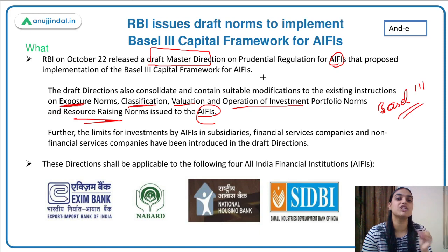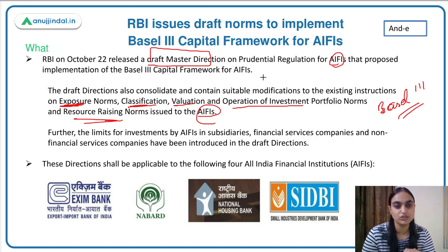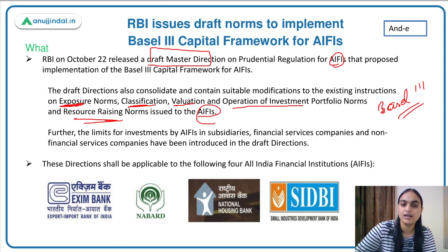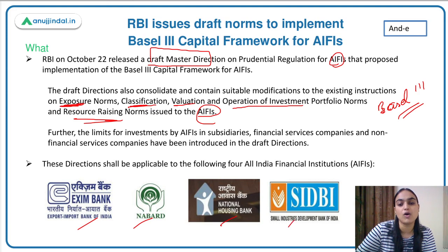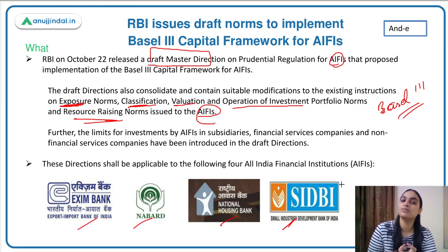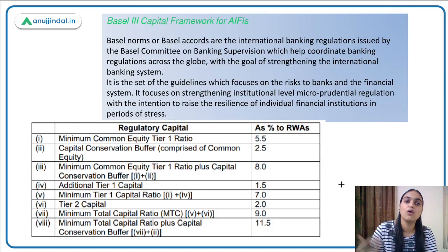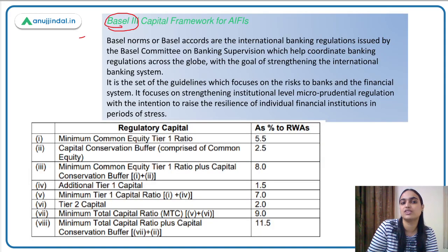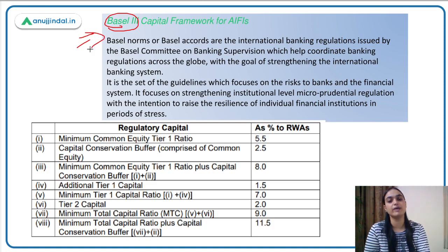These directions will be applicable to four All India Financial Institutions which will follow the Basel 3 framework. The four institutions are: EXIM Bank, NABARD, National Housing Bank (NHB), and the Small Industries Development Bank of India (SIDBI). These are the All India Financial Institutions on which this set of directions will be applicable.